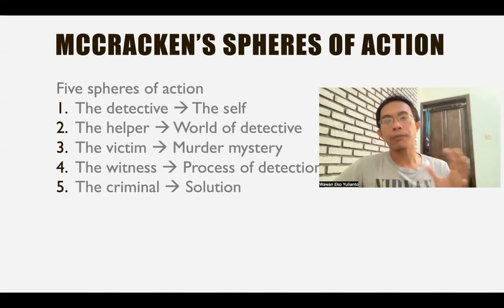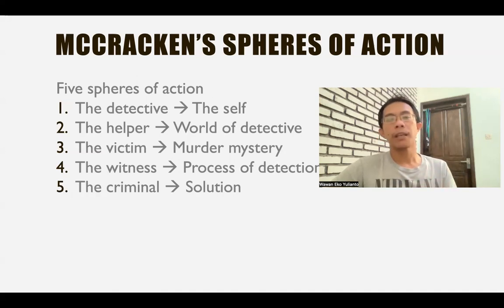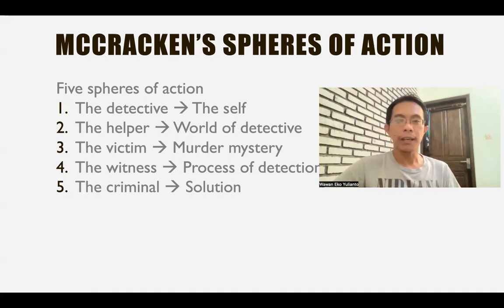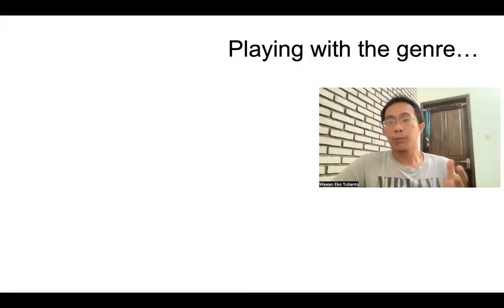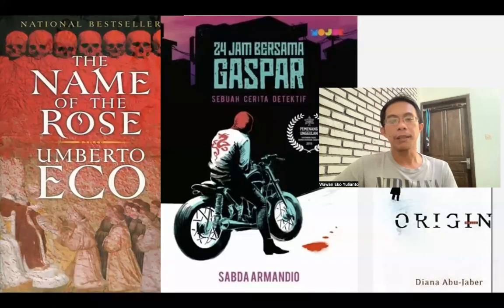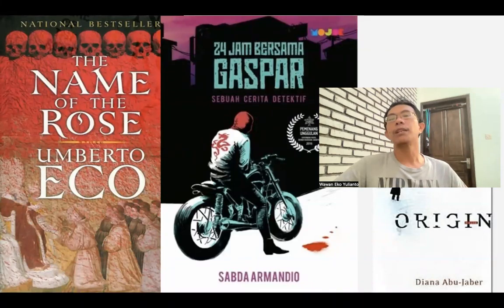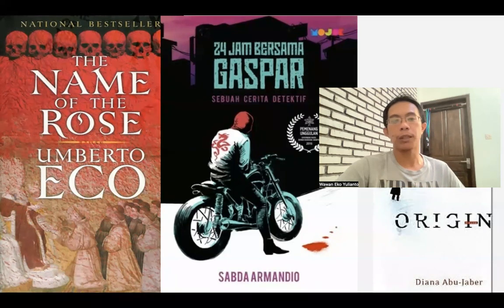So these are the five spheres of action in a detective story that you can use as your area of discussion. You can focus on a specific area and focus on that. You can go further and find all five elements in the detective story, crime movie, or detective movie that you have watched or read. These are some examples of detective stories that don't really use the standard elements, but you can still see that these works are playing with those elements.